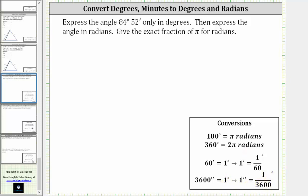Because we are given the angle 84 degrees and 52 minutes, 52 minutes is equal to 52/60ths of a degree, and therefore we can write this as 84 degrees plus 52/60ths of a degree.